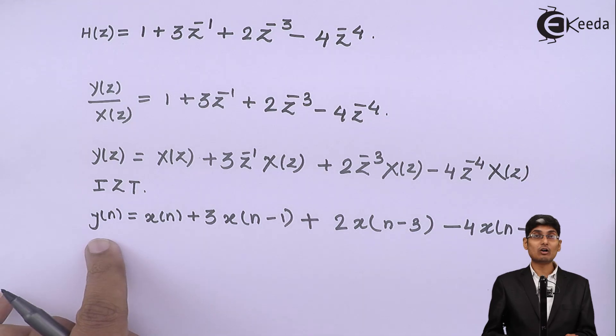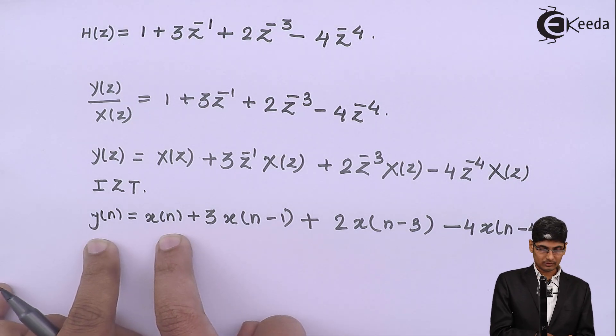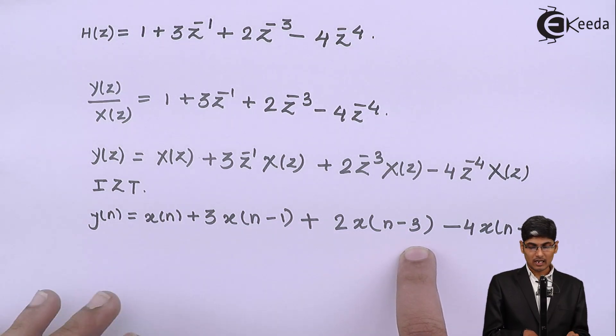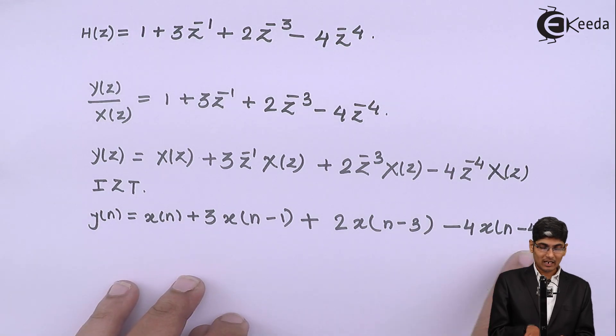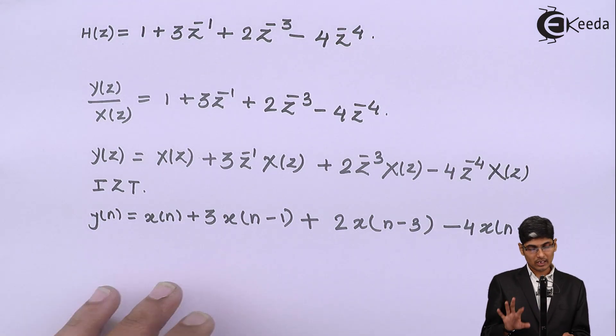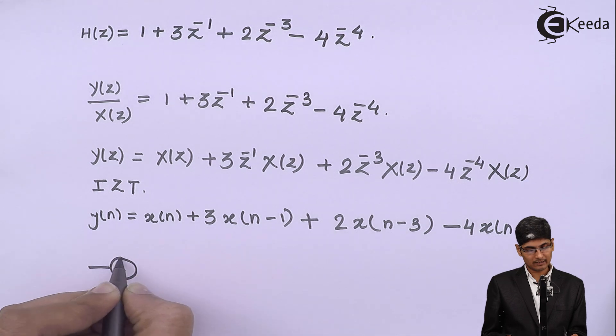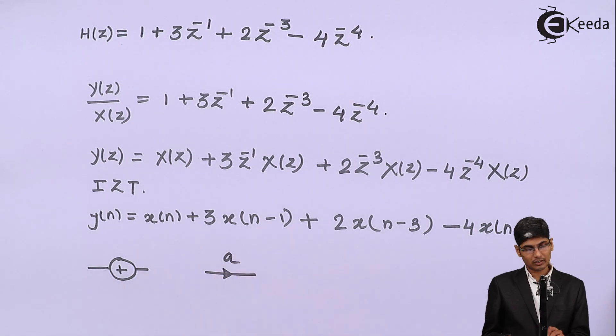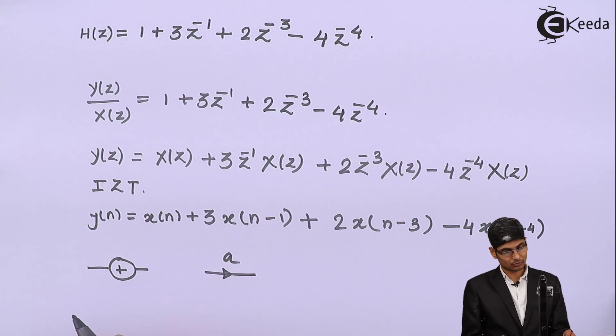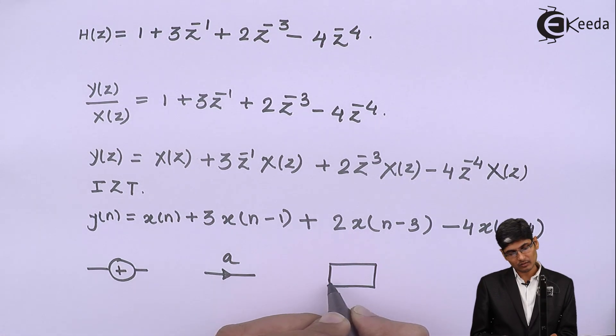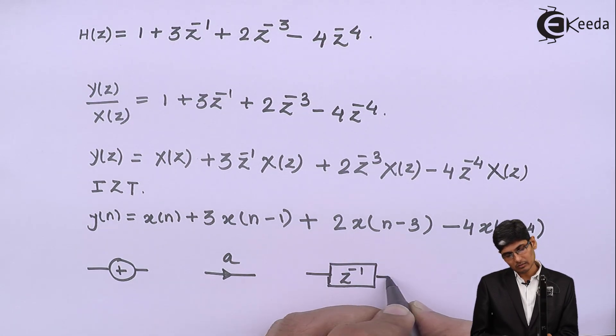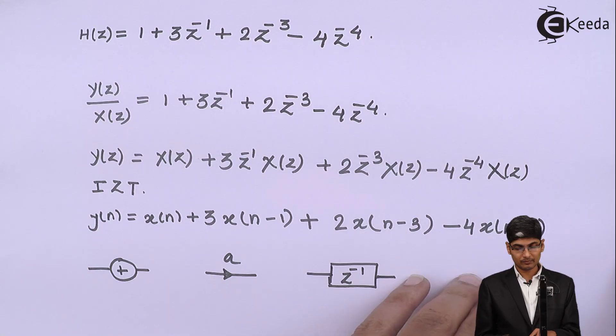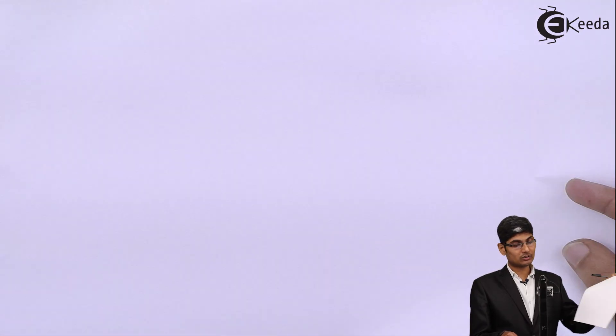So what we can see is, the output depends on the input, then 1 delayed input, we have to delay the input thrice and we have to delay the input 4 times and then we have to add them all. So there will be a summing block because we are going to add the things, there will be a multiplier block because we are going to have coefficients, constant coefficients to it, and we are going to have a delay block because we need to have delays into it. So these 3 blocks will be there in the structure. Now, let us realize the structure.